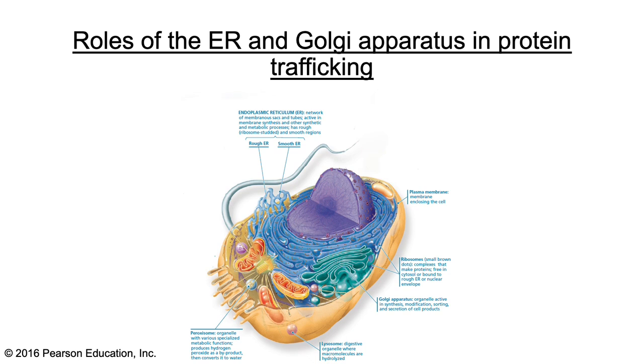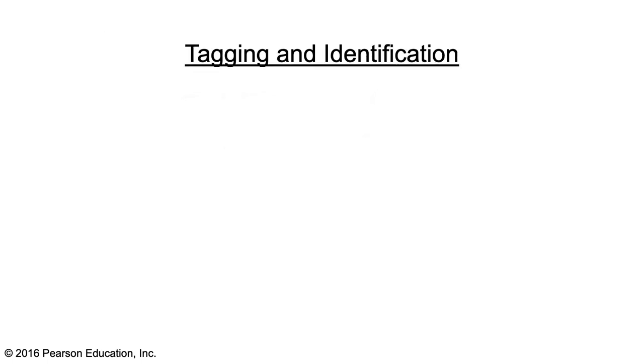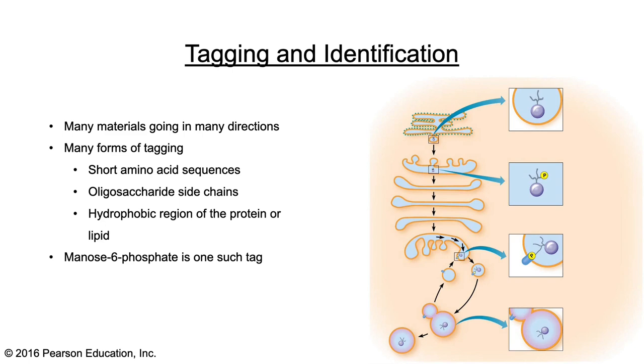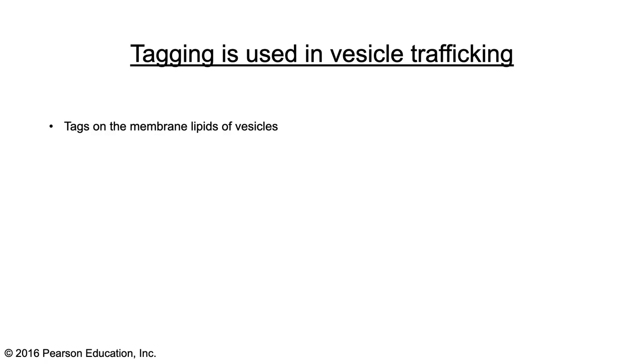Next we discuss the roles of the ER and Golgi apparatus in protein trafficking — the direction and movement of proteins to where they need to go. Part of trafficking is the use of tagging and identification, since there are many materials going in many directions. There are many forms of tagging: short amino acid sequences, oligosaccharide side chains, hydrophobic regions of the protein or lipid. One example shown here is mannose-6-phosphate, circled in red. Tagging is also used on the membranes of vesicles, where a specific kinase connects a phosphate group to the specific identifier.